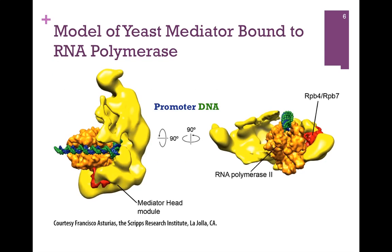Here we have a model of the yeast mediator bound to RNA polymerase. The promoter DNA is in blue and green, the RNA polymerase is the more dense surface model in the darker yellow, and mediator is in the brighter yellow.